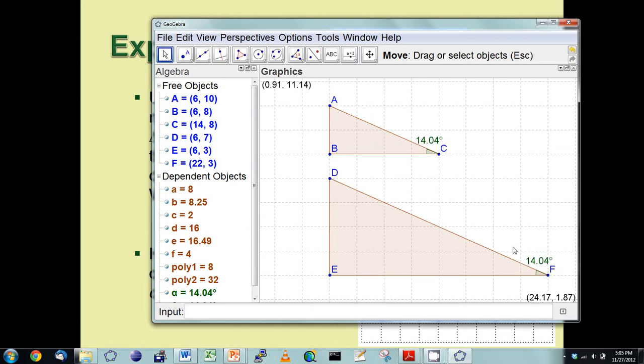In this case, both angles are 14.4. That angle, that angle both 14.4. Similarly, with the other angles, angle E is a 90 degree, same with angle B. Angle A is going to be equal to angle D. They're congruent to each other.